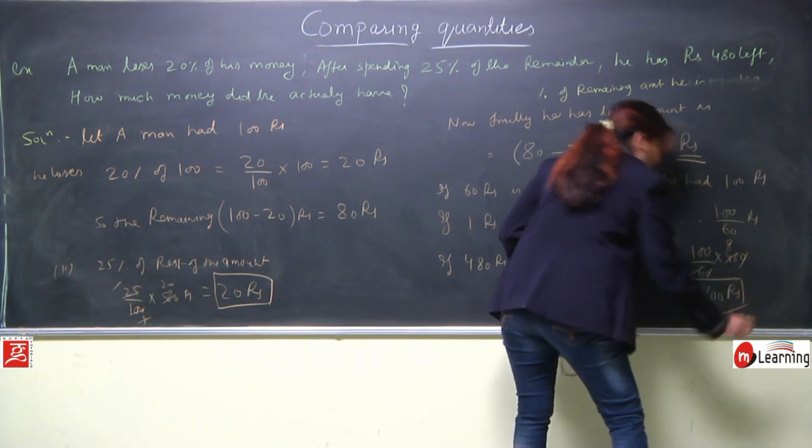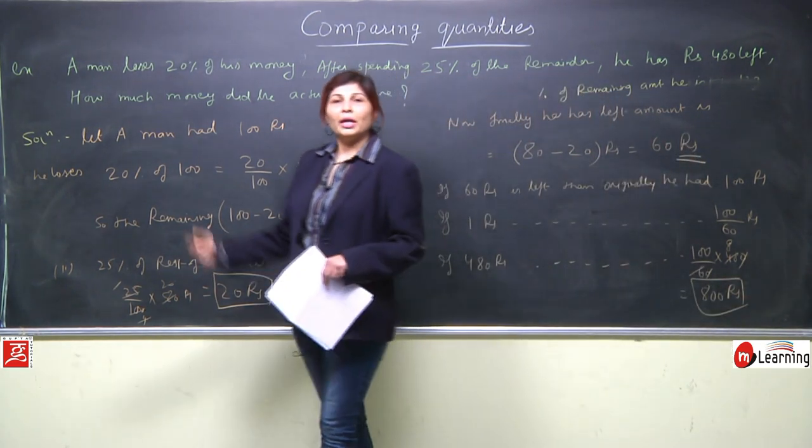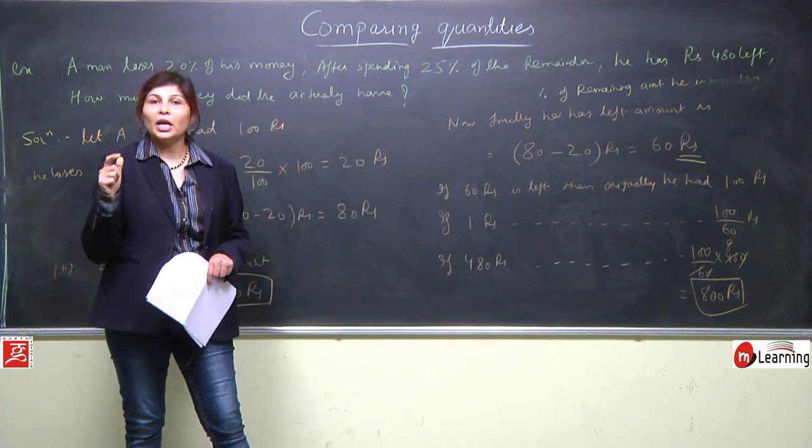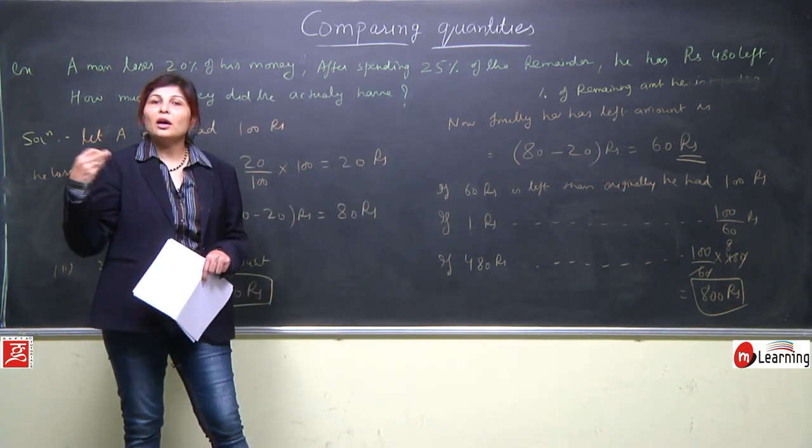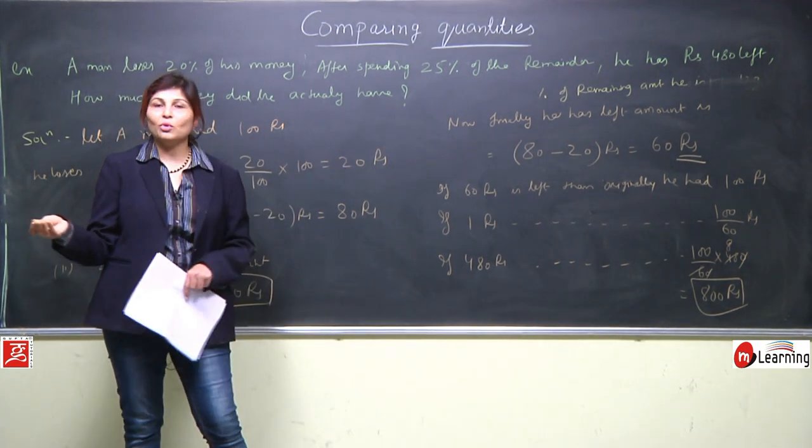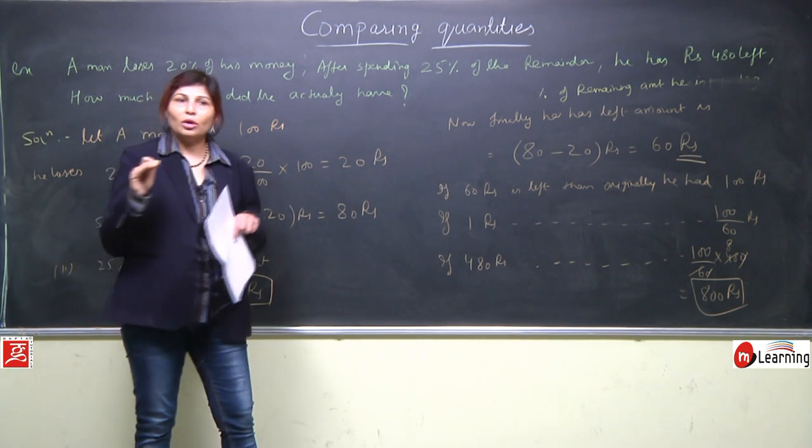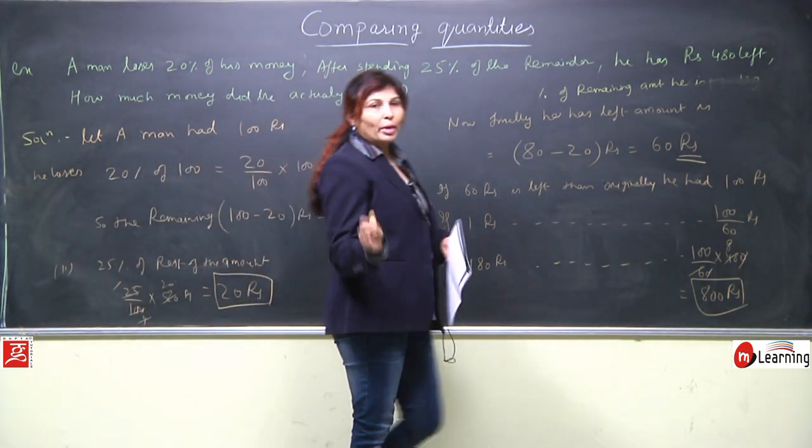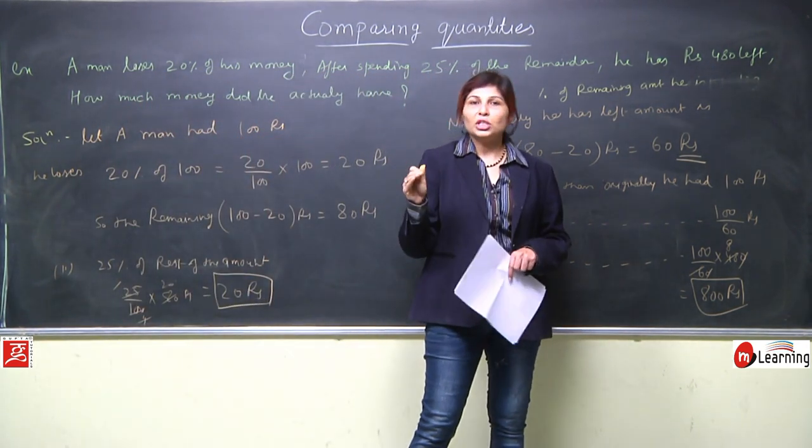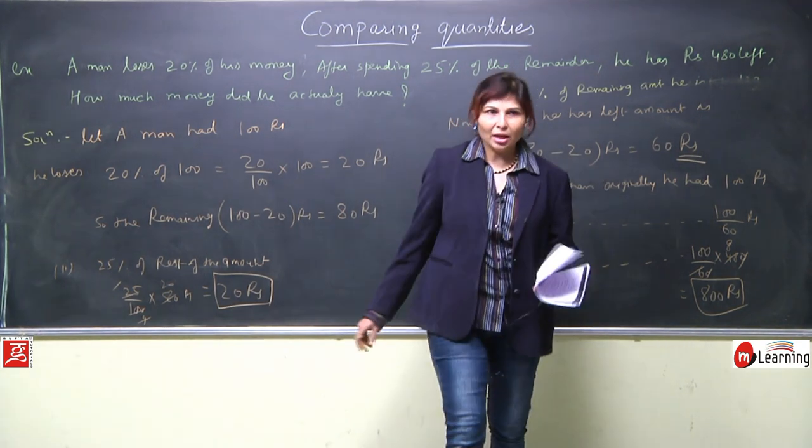We already solved it, that's why we did it quickly. Means the man had originally 800 rupees. From that after all expenditure, finally he has 480 rupees left. Simple, sober, and good questions. Explained with both methods. But you try that we do with the 100 wali method.